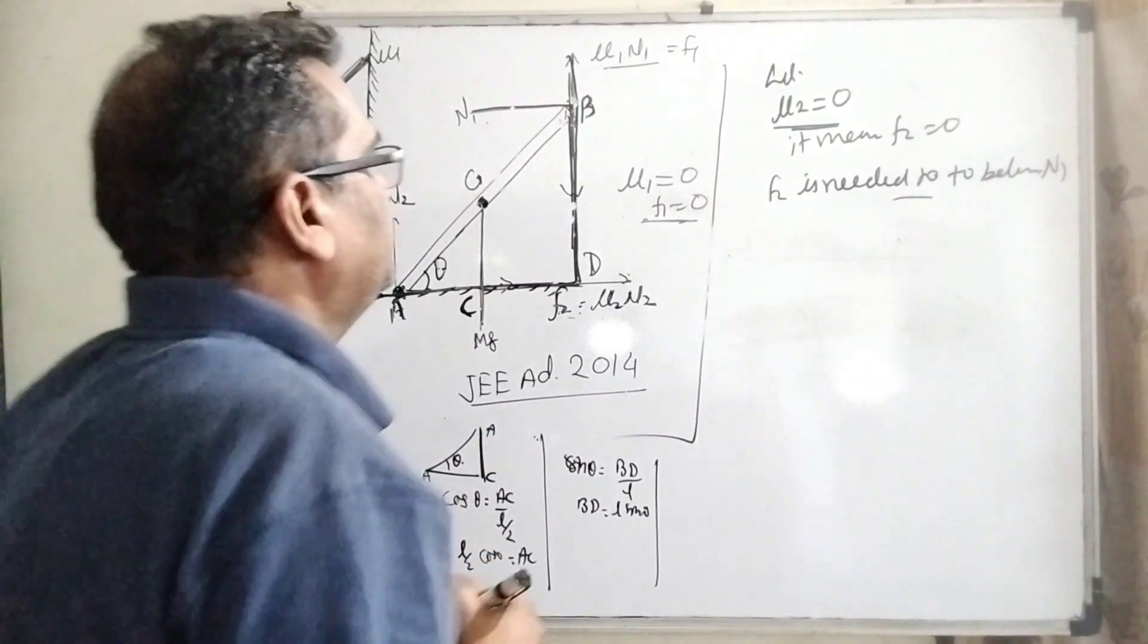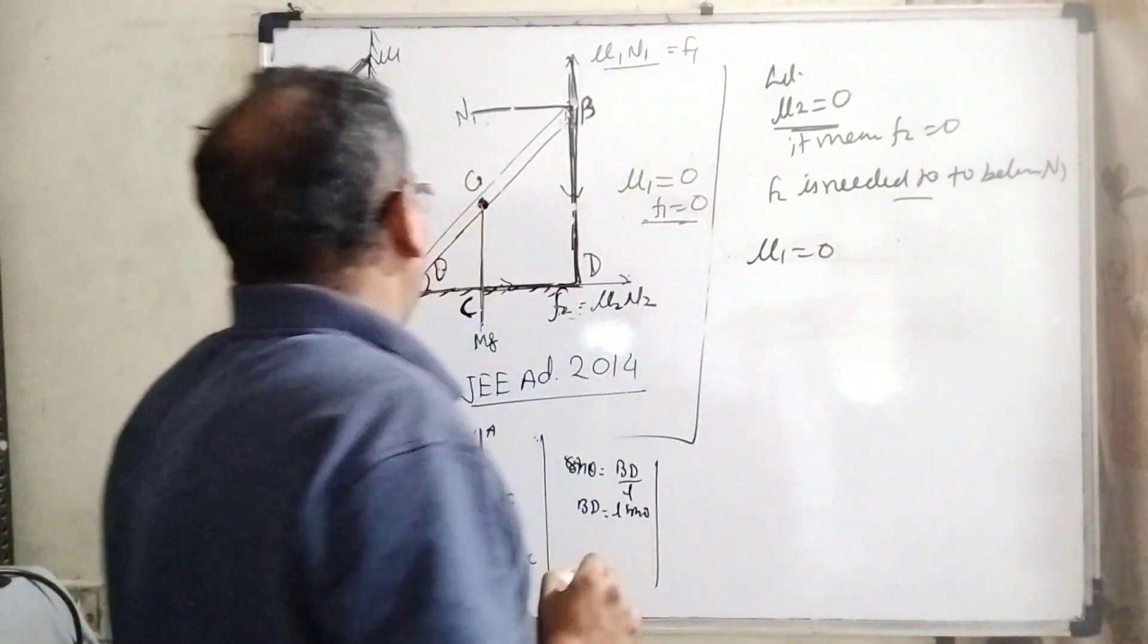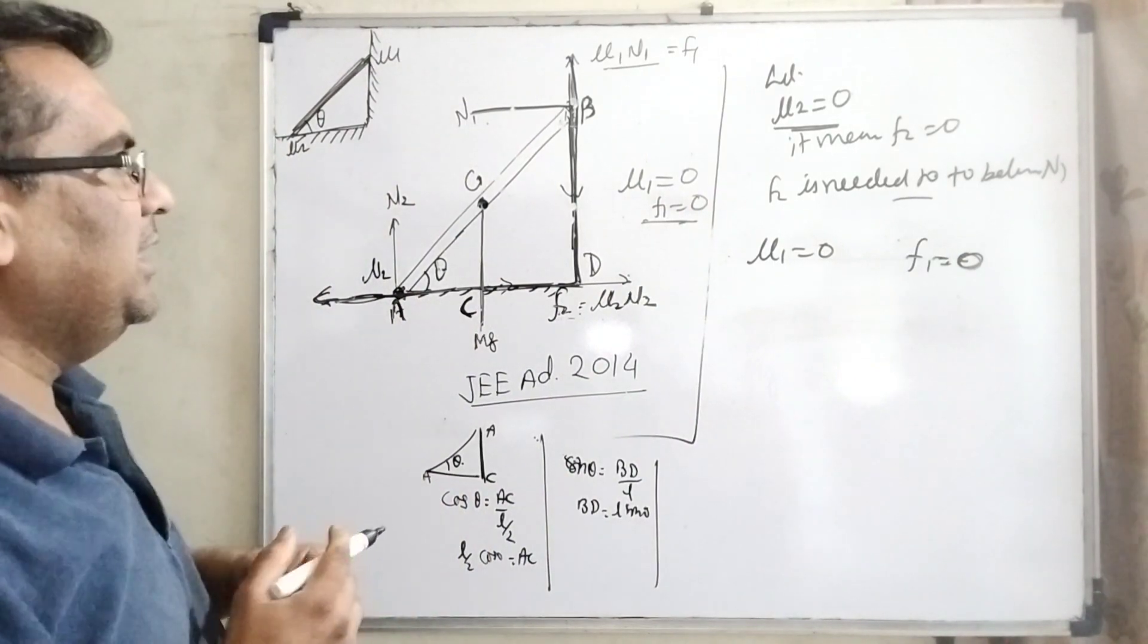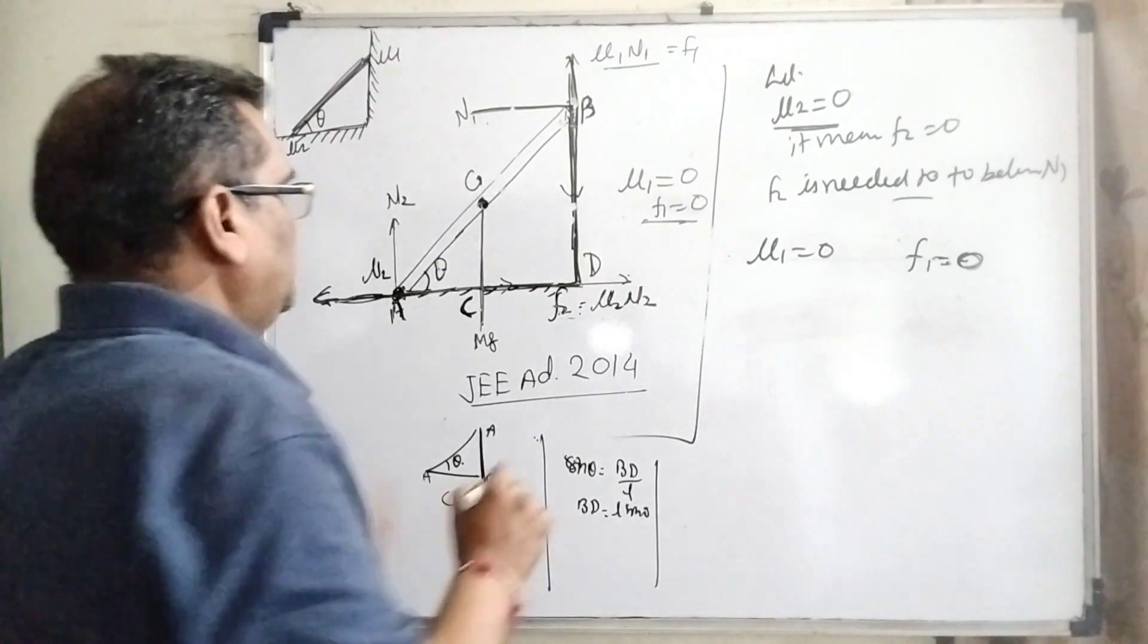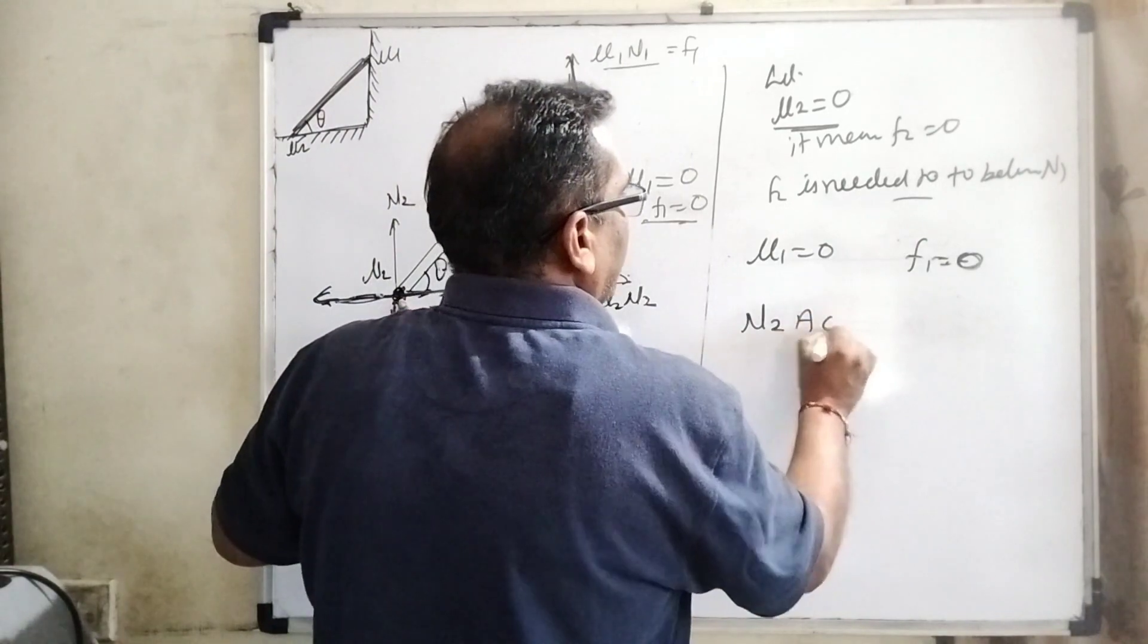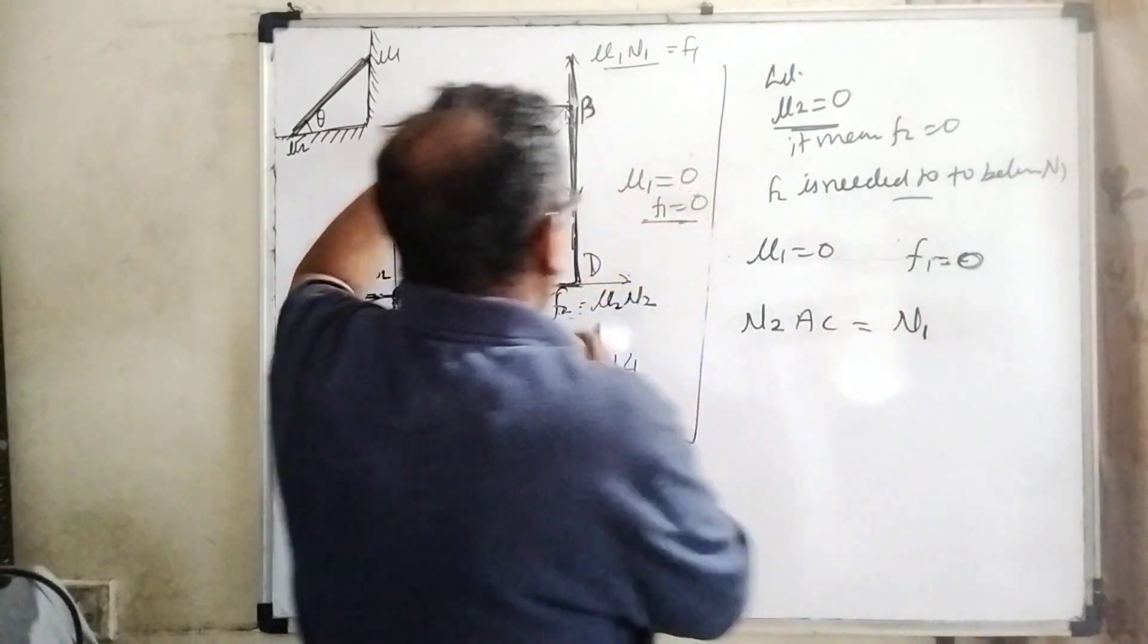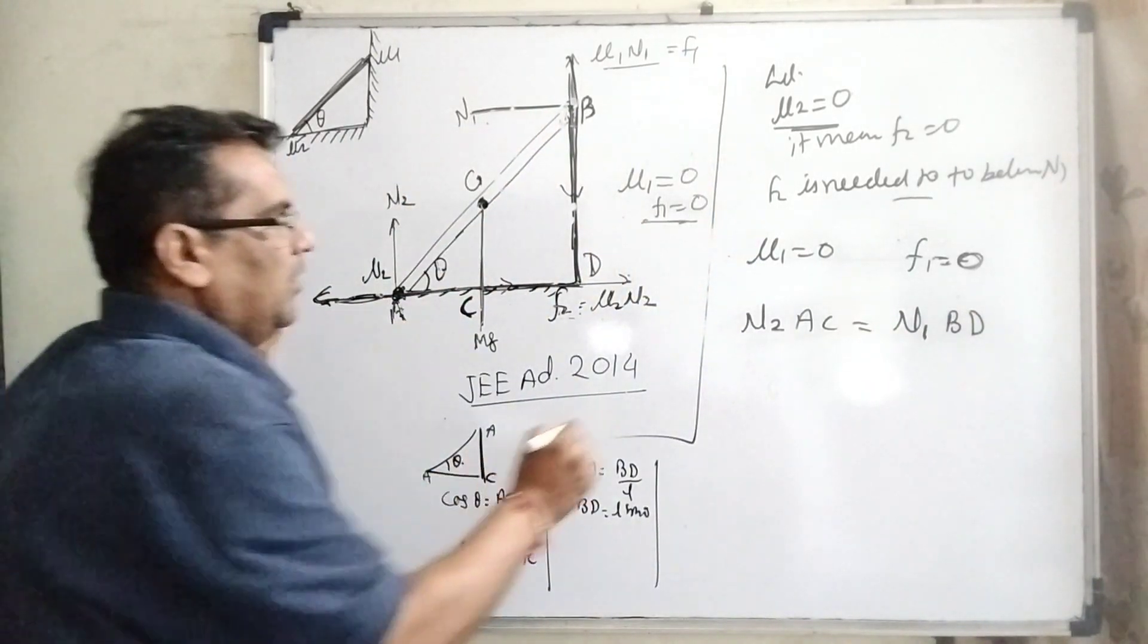For the second condition, let us suppose mu1 equals 0. Then mu1 equals 0 means f1 equals 0. In that case, we have taken the balancing torque about point A. Torque equals N2 times perpendicular distance AC, and this torque equals, when it is slipped down, N1 times perpendicular distance BD.